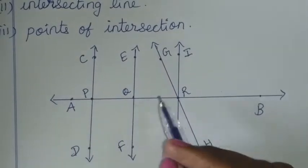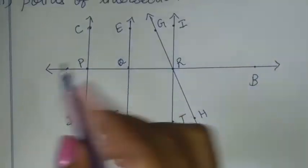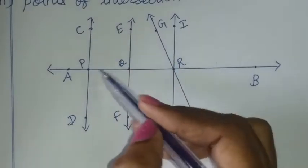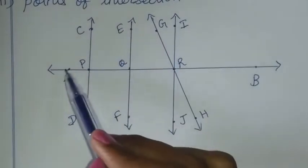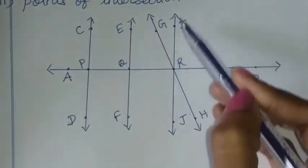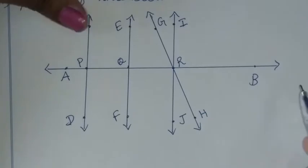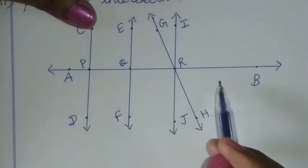In this picture, how do you see this figure? How many lines are there? 1, 2, 3, 4, 5 lines. If you see the Parallel Lines...